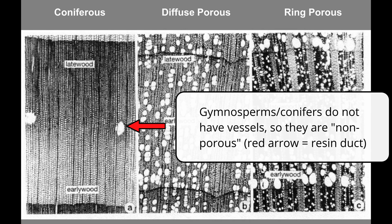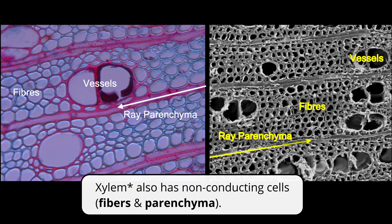Remember, these terms only apply to angiosperms or hardwoods because they have those vessels. Gymnosperms or softwoods do not have vessels, and so their wood generally looks more uniform. Plants also have non-conducting cells that support the conducting cells. The two types covered in the study guide are parenchyma and fibers.